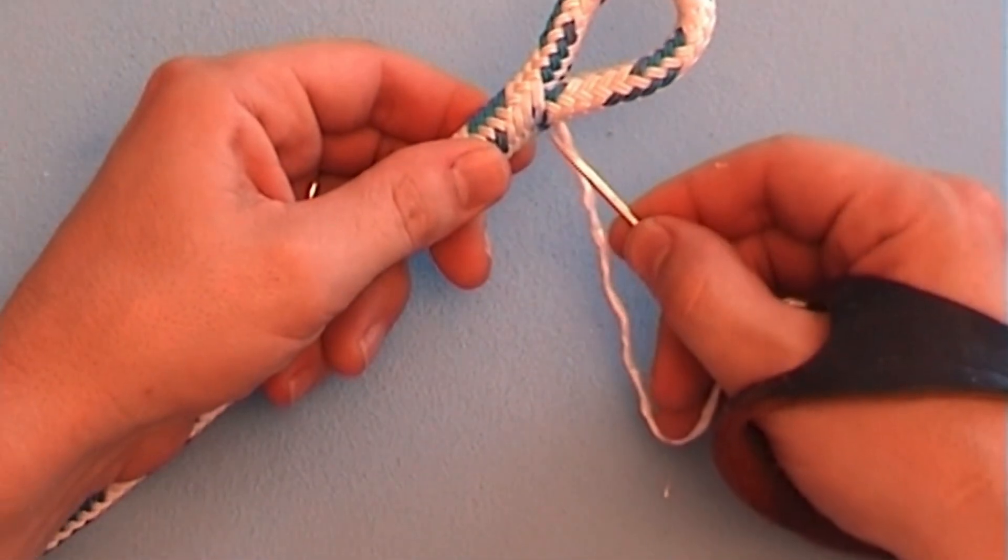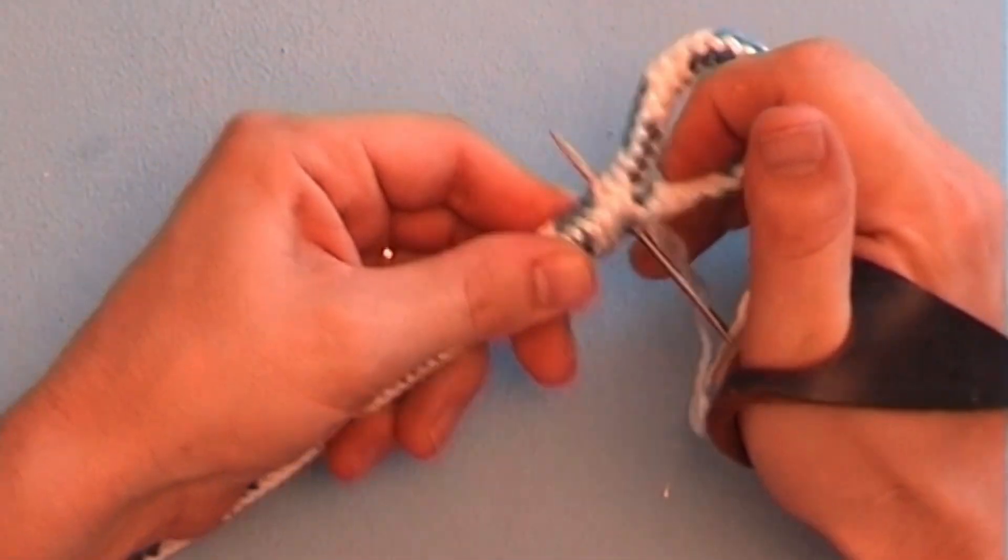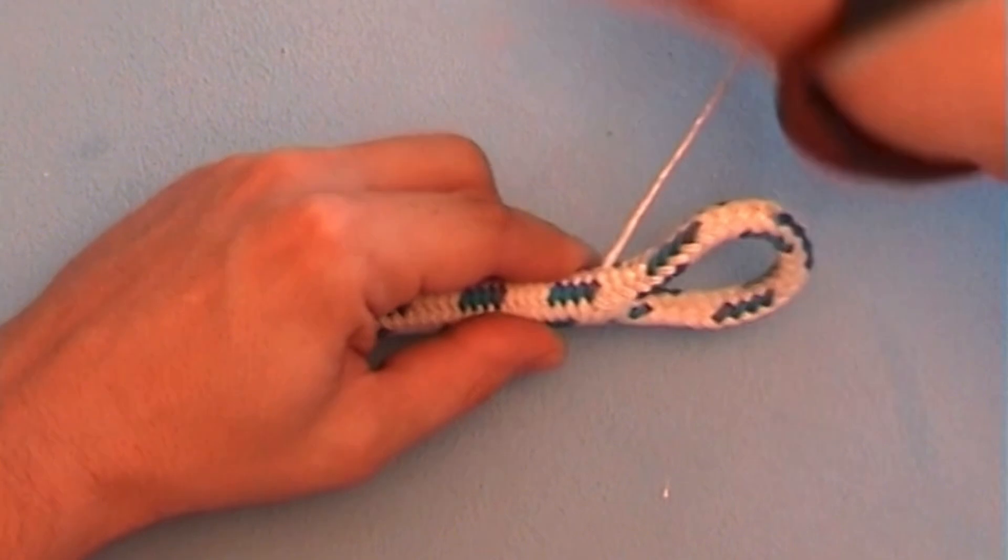When that's done, secure the throat of the splice by stitching through a couple of times with the cover marker yarn. That way no whipping is needed.